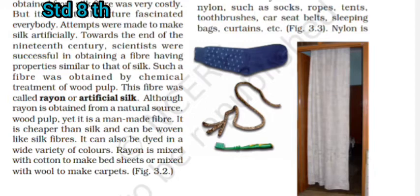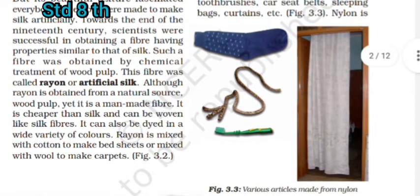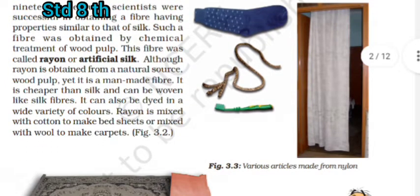Towards the end of the 19th century, scientists were successful in obtaining a fiber having properties similar to that of silk. Such a fiber was obtained by chemical treatment of wood pulp. This fiber was called rayon or artificial silk. Although rayon is obtained from a natural source — wood pulp — yet it is a man-made fiber.